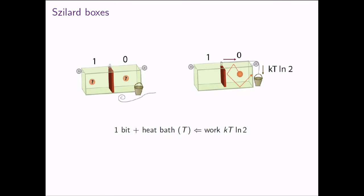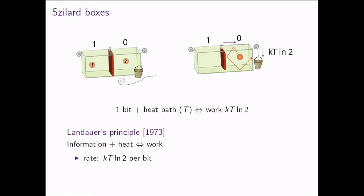We can also go the other way: if I have this box and don't know whether the particle is on the left or right, but I want to reset this bit, I can start with no information and push the partition to one side. Pushing it costs me again kT log 2, where k is the Boltzmann constant — just a constant to compare temperatures and energy. This is the heart of Landauer's principle: you can trade information and heat from a heat bath for work.